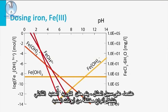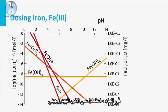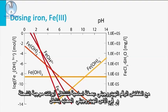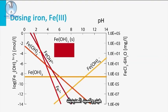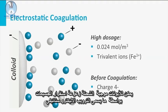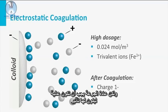When, for example, iron(III) chloride is dosed, different species of iron ions are formed in the water depending on the pH. With low pH, mainly positively charged ions are formed, and at neutral pH, mainly ferric hydroxide is formed. The positive ions can destabilize the particles by so-called electrostatic coagulation, but normally the dosage must be high to have an effect.